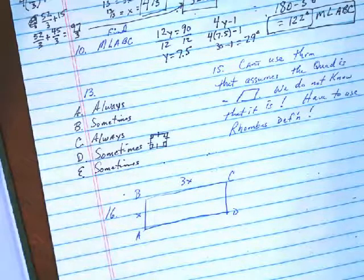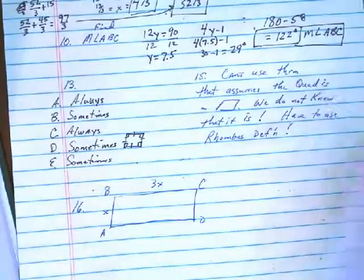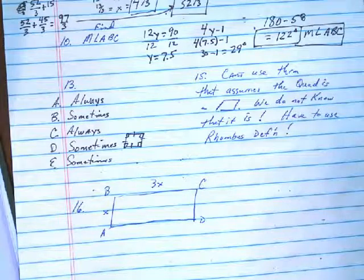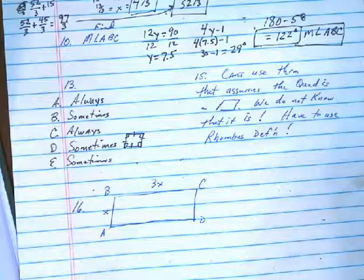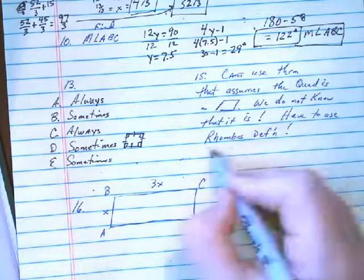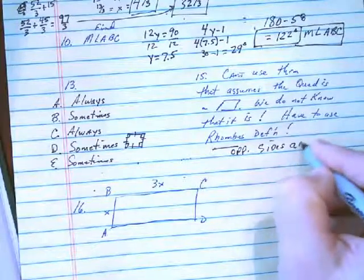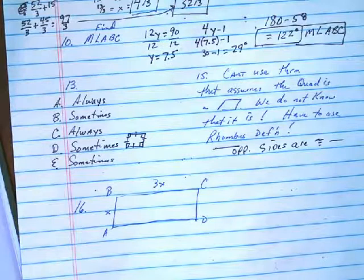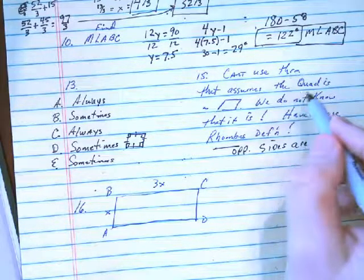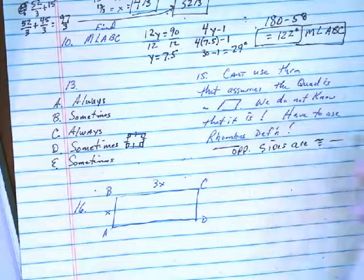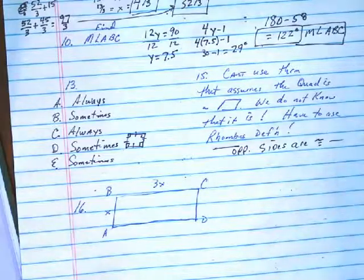So that does that for 13. Let's go to 15. Explain the error. Here's what I've written out. You can't use the theorem that assumes the quad is a parallelogram in order to prove it. What you would have to use is the idea that it's a rhombus, that opposite sides are congruent. That's what you would have to use. So that's kind of tricky on 15. But you can't use that the quad is a parallelogram. You'd have to use that opposite sides are congruent to say that it's a rhombus, which then you could say that it's a parallelogram.